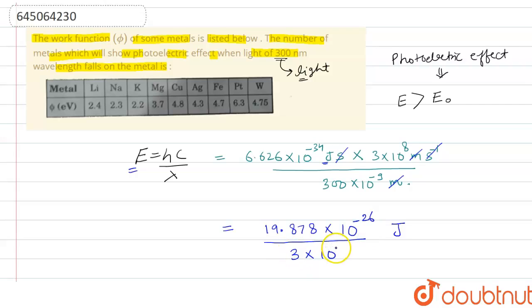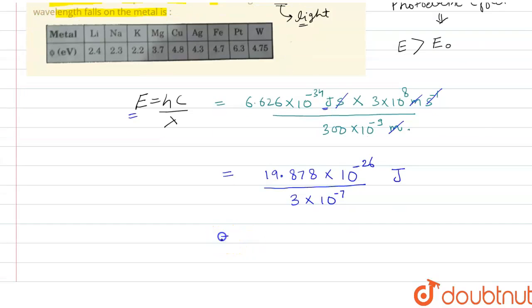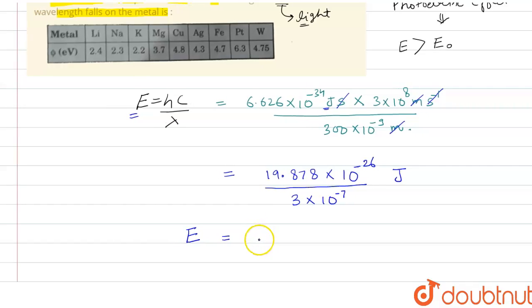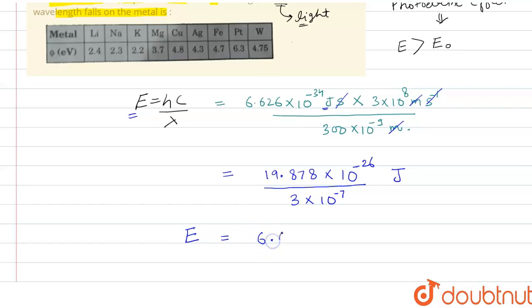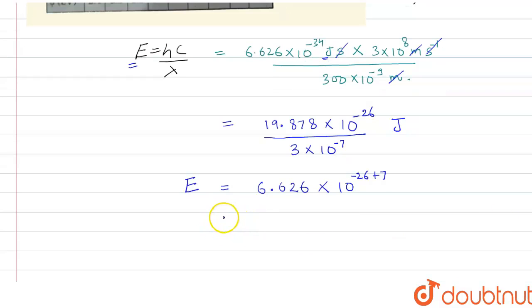By solving this, we will get the value of E. It will come out to be 6.626 × 10^(-26+7). So from this we will get 6.626 × 10^-19 joule.